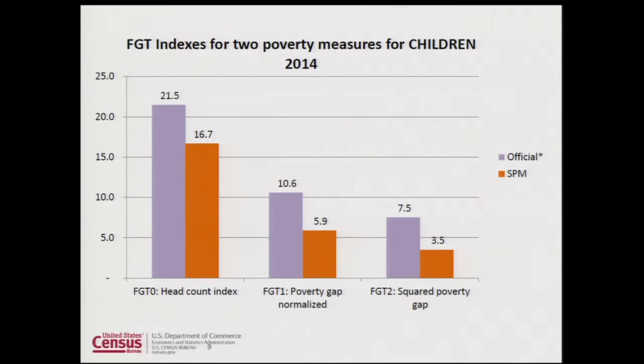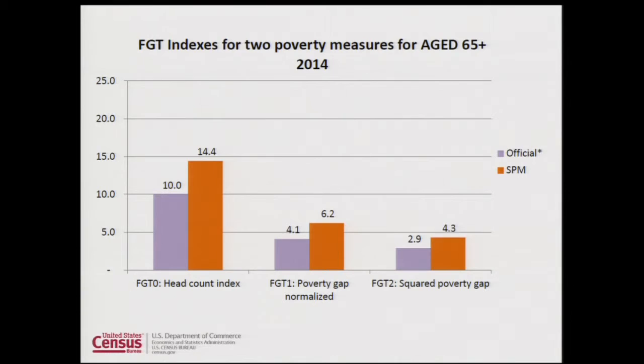For children, we again see that poverty rates are lower with the SPM, and even more so for normalized and squared poverty gaps. For the aging population, we see exactly the opposite story: the SPM rate for the elderly is higher, their gaps are higher with SPM, and the squared gaps are higher. This is because the main benefit elderly people receive is Social Security — a cash benefit in both measures — and what the SPM does differently for this group is subtract medical out-of-pocket expenses.